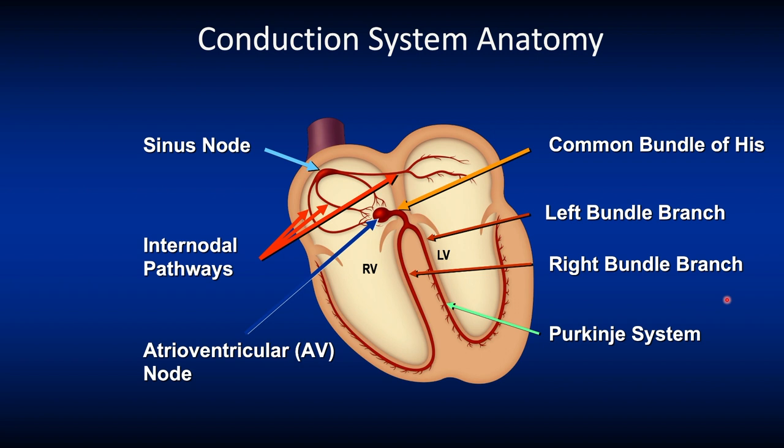Remember that electrical impulses leave the AV node, pass into the Bundle of His and then down the bundle branches simultaneously. The first section of the ventricle to begin depolarization is the mid portion of the Intra-Ventricular Septum from the left side, giving rise to the normal Q wave on a 12-lead ECG. The walls of the left and right ventricles are depolarized simultaneously.